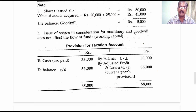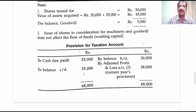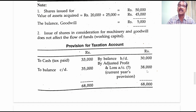Provision for taxation account is opened next. Being a credit item, the opening balance of 30,000 is written on the credit side and the closing balance on the debit side. We were informed that tax of 33,000 rupees was paid — journal entry: provision for taxation account debit to cash account 33,000. The balancing figure that comes on the credit side is 38,000, which is nothing but the current year provision for taxation. Journal entry: adjusted profit and loss account debit to provision for taxation 38,000.